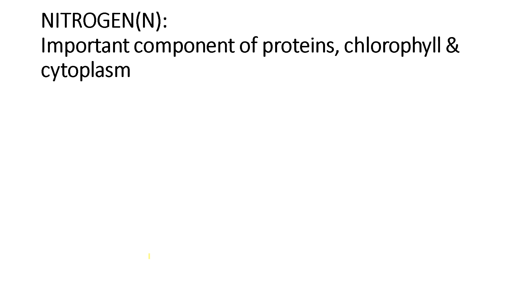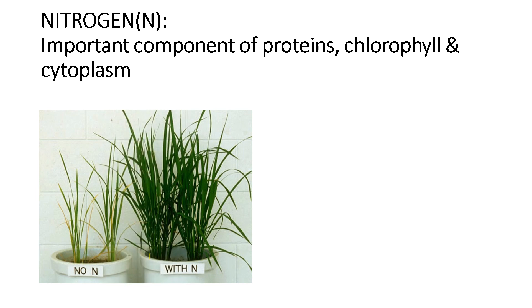First of all, let us begin with nitrogen, which is an important component of proteins, chlorophyll, and cytoplasm in plants. Look at this picture — there are two potted plants. One pot is deficient of nitrogen, and the other is supplied with adequate amount of nitrogen. The plant with less nitrogen shows stunted growth or grows very slowly, whereas the plant with adequate nitrogen supply shows fast growth or grows lush green.